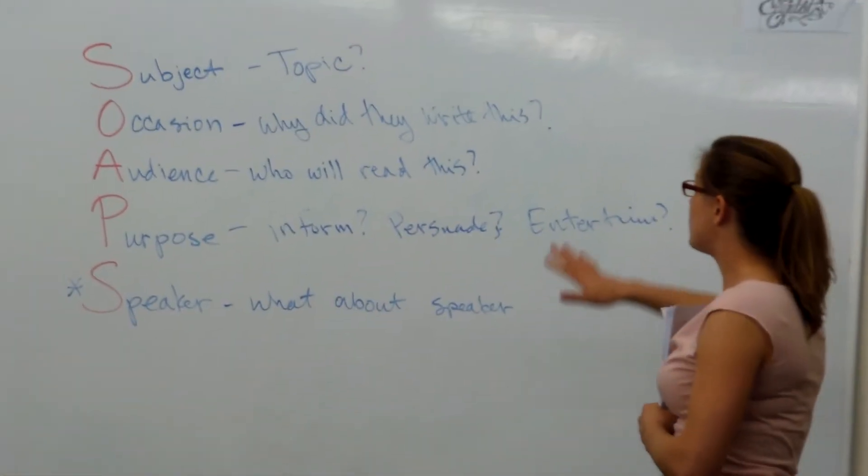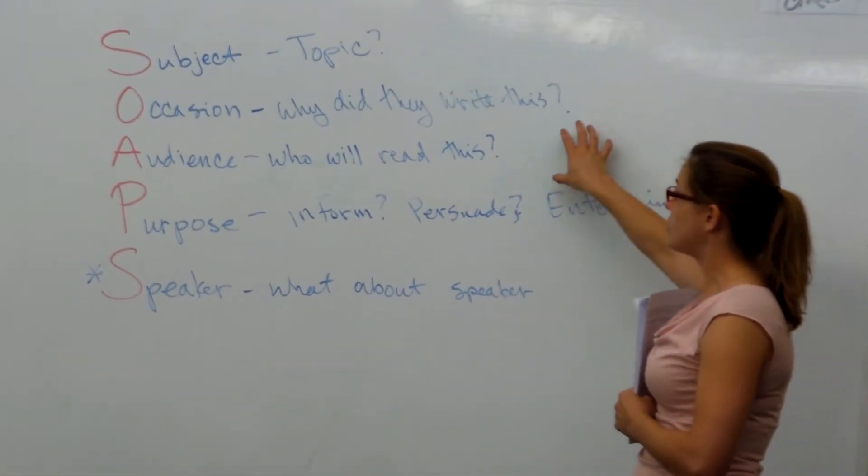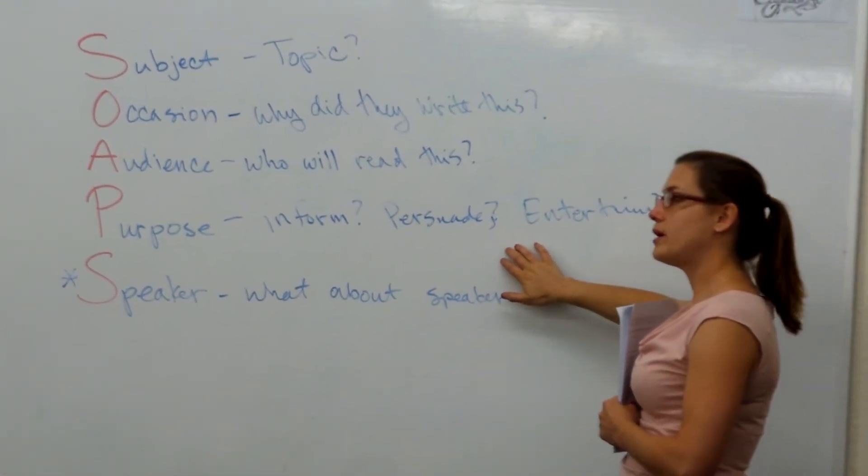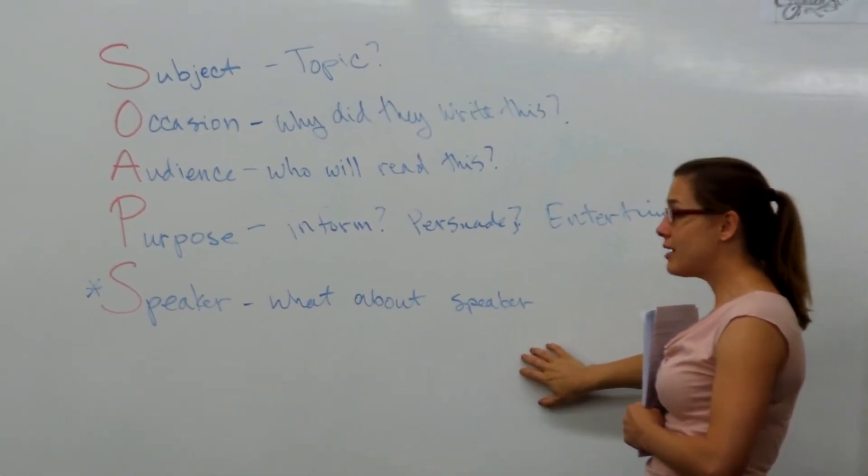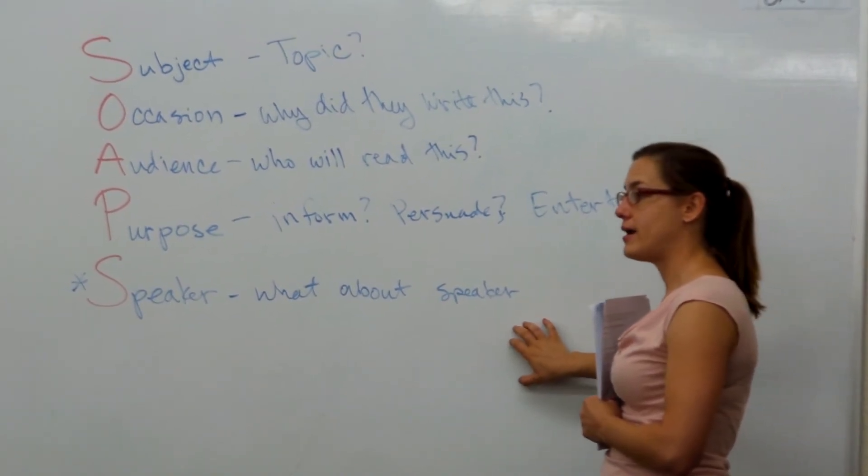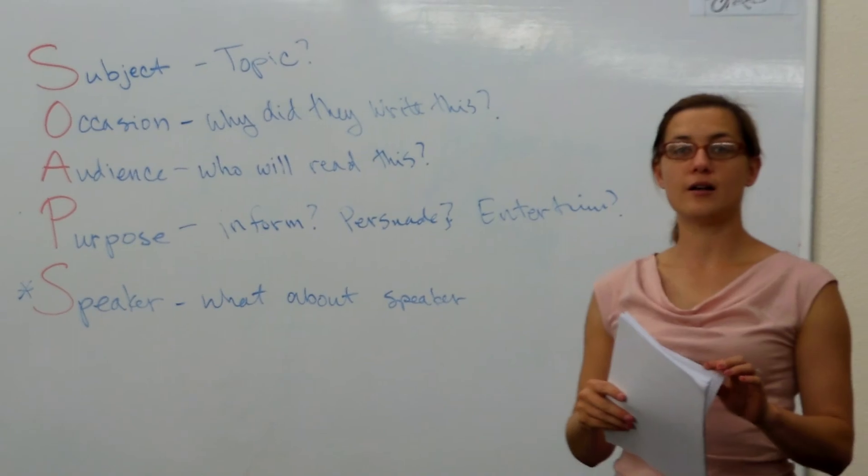We're going to read through it, and you're going to be looking for: okay, what is the topic? What is the occasion? What is the audience? Purpose? And then if we can, sometimes we can't always get this information, right? What about the speaker? Do they have any biases? All right? Let's talk.